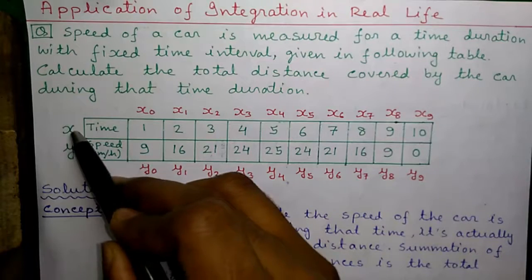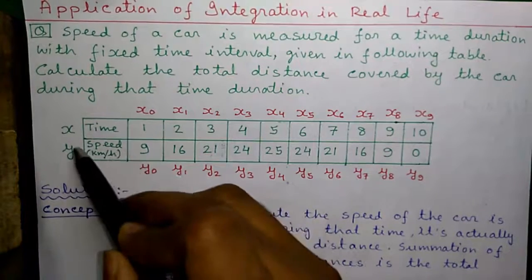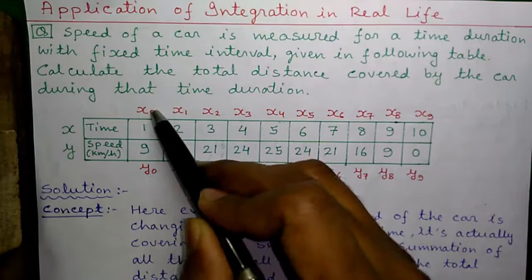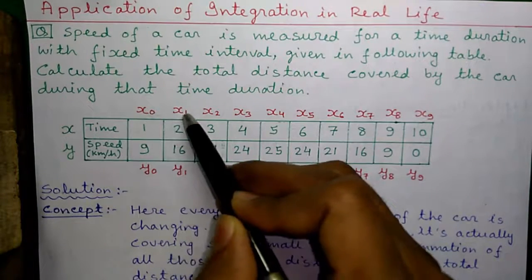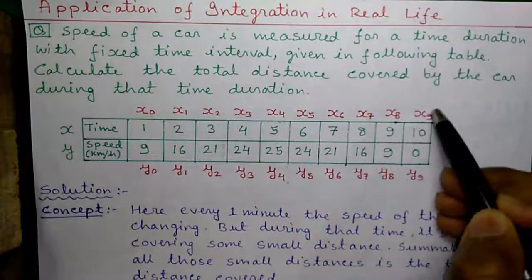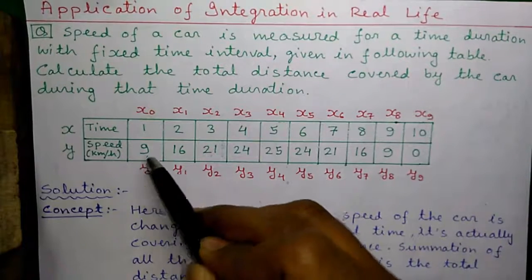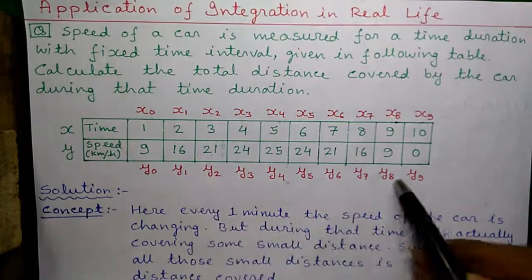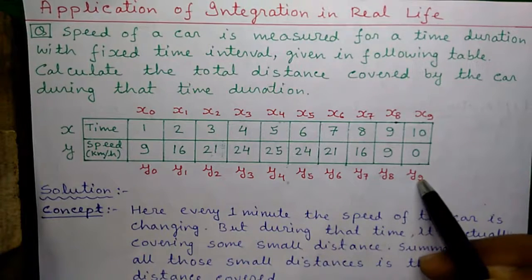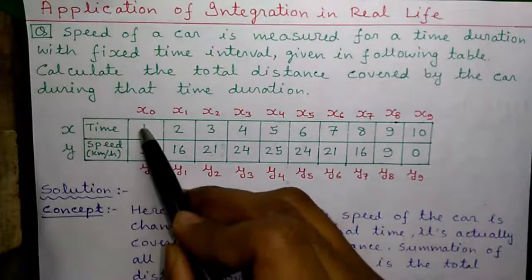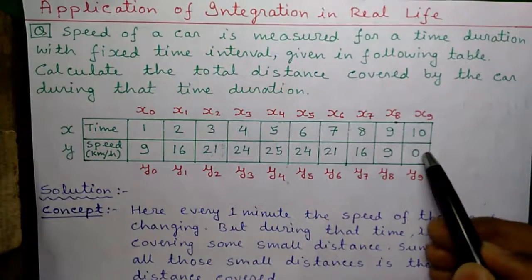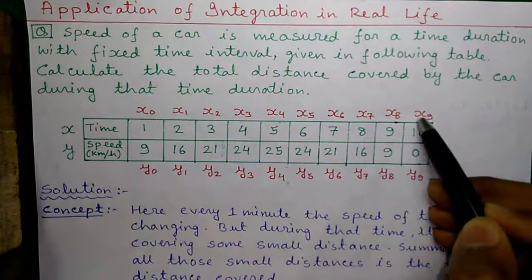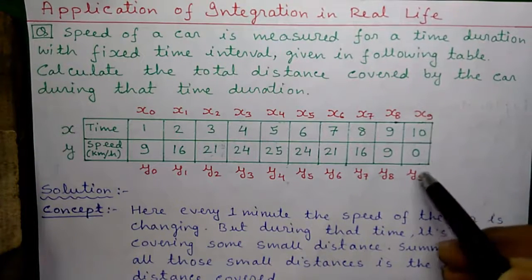Time values are represented as X and speed values as Y. The first value of X is denoted as X0, next X1, and so on up to X9. Similarly, the first value of Y is denoted as Y0, next Y1, and so on up to Y9. Notice there are total 10 values for X and 10 values for Y, and the last term is 10 minus 1, that is 9, for both X and Y.